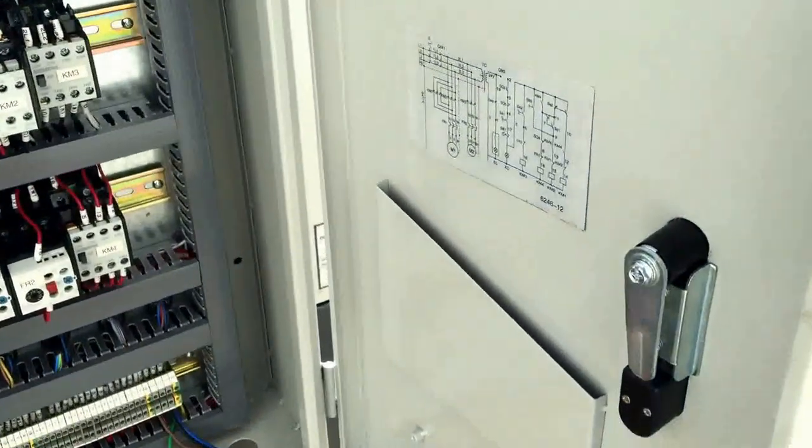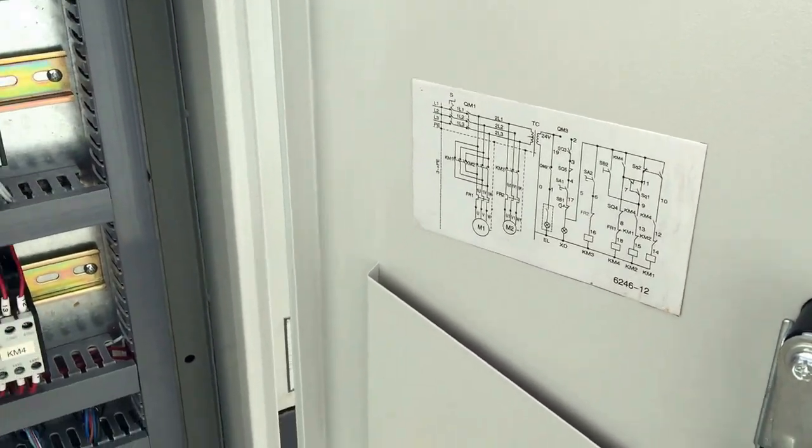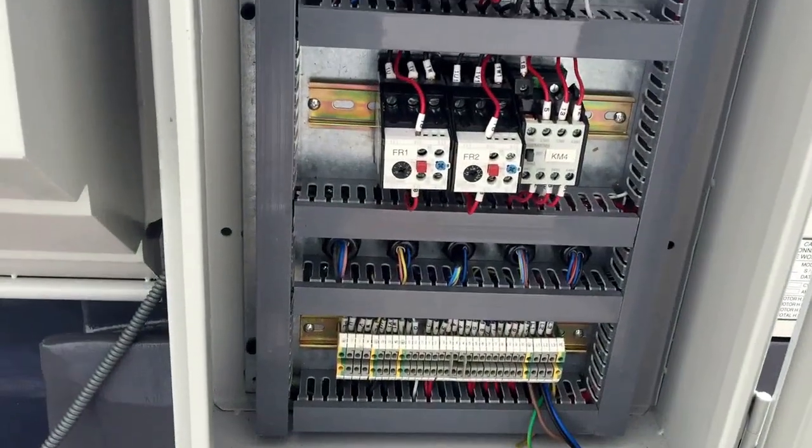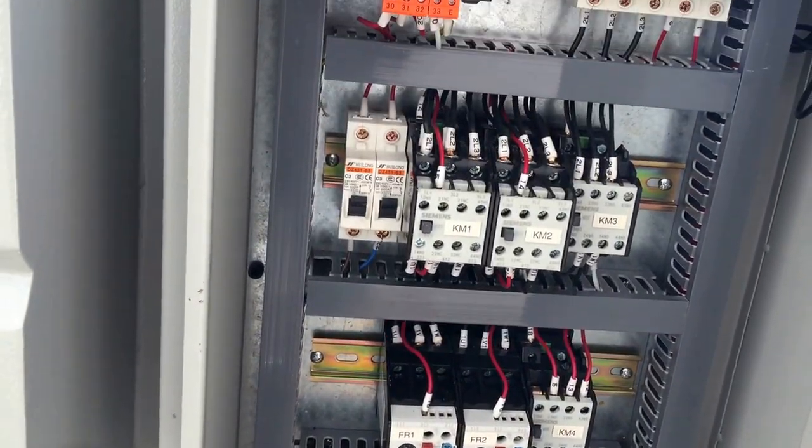And with our electrical control cabinet as you can see there we've got the schematic just inside the door. We use Siemens electrics which are all off the shelf name brand electrics.